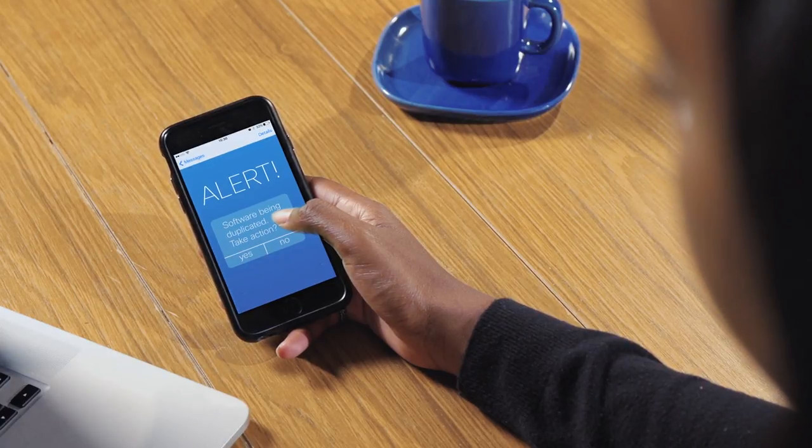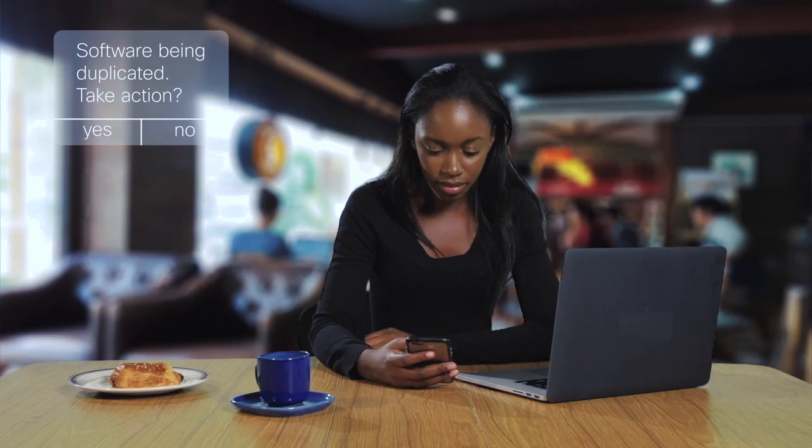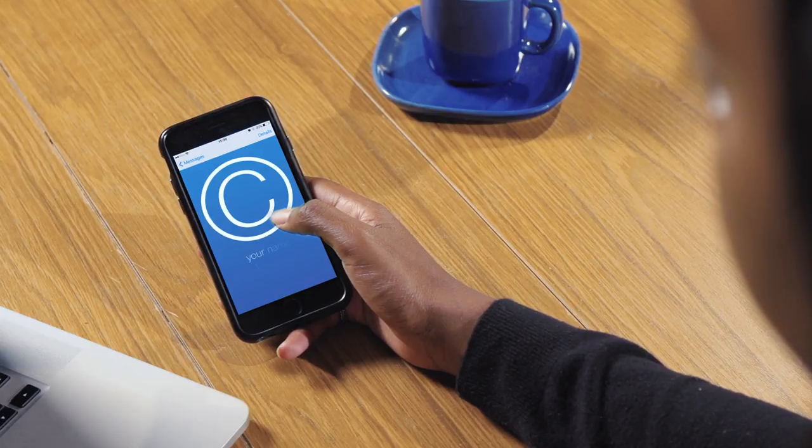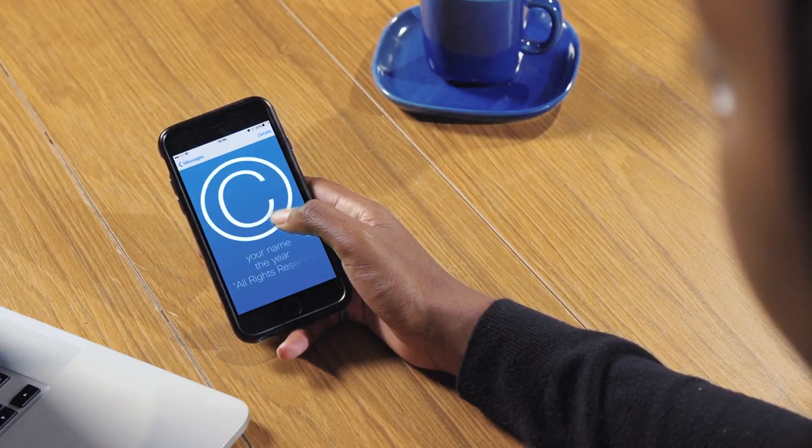And what about that little C in a circle? You don't need to mark your work for it to be protected. But it's advisable to put a C symbol on each piece of work you produce, with your name, the year, and all rights reserved, to deter people from copying. Easy!